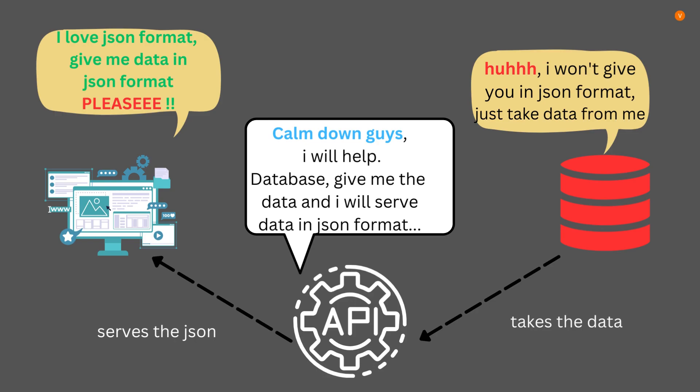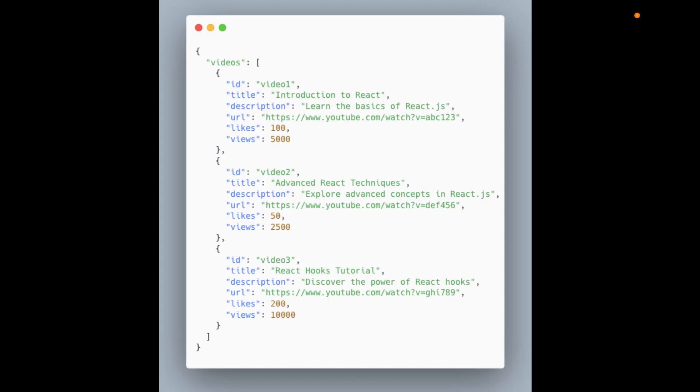It's like the front end is saying, 'I do not want to talk with the database — just give me the JSON and I will do everything.' And the database is saying, 'Take the data from me and do anything.' So the API is in between these two pieces of software: it takes the data from the database, creates a JSON, and serves that JSON. The front end takes that JSON and shows the data — in this case, videos and data related to videos like likes and comments.